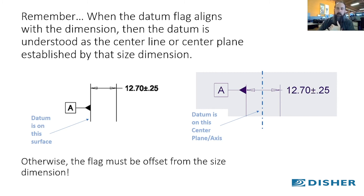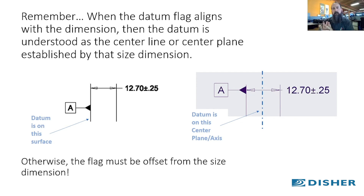To summarize: when the datum flag aligns with the dimension, the datum is understood as the centerline or center plane of that dimension; otherwise the flag must be offset from the size dimension. Do not place the datum flag on the actual centerline or center plane marks on your drawings. It may look cleaner, but it's not allowed by the standard, and it costs you credibility — it signals that you don't really know the standard. Hopefully this helps you avoid some of these pitfalls.